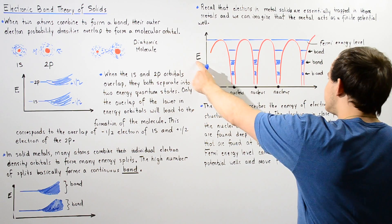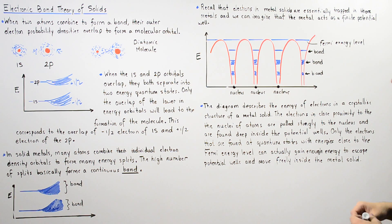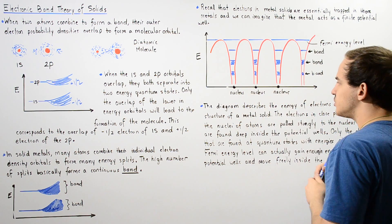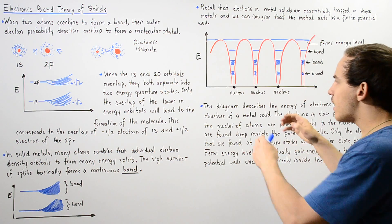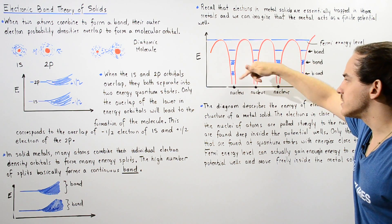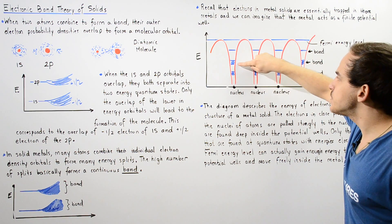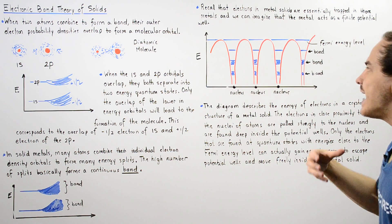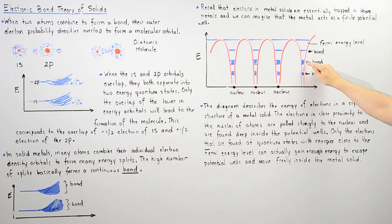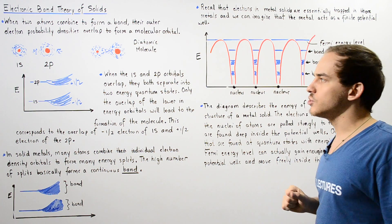The y-axis of the diagram is energy and the x-axis is the separation distance between the nuclei of our atoms. To save space, only three nuclei are shown: nucleus 1, nucleus 2, and nucleus 3. Electrons found closer to the nucleus are lower in energy and therefore more stable. The blue regions show the allowed energy quantum states described by these continuous bands — band 1, band 2, and band 3 — though many more bands exist.